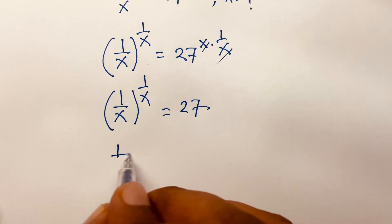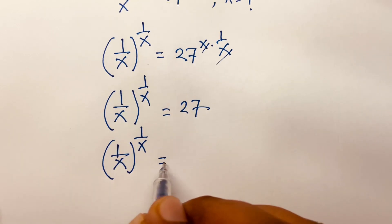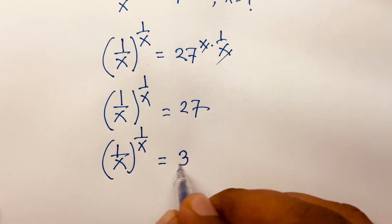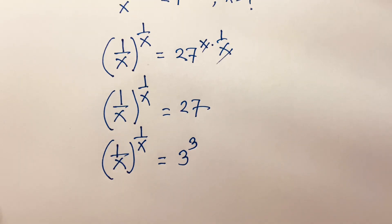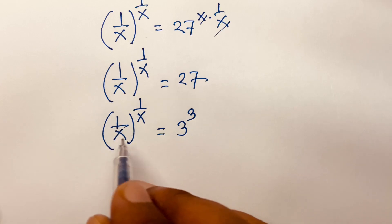It will be (1/x) power 1 over x equals 27, which equals 3 power 3. Then I can say easily 1 over x is equal to 3.